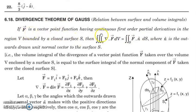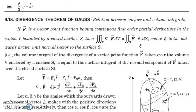The Divergence Theorem says that if F is a vector point function having continuous first-order partial derivatives in a region V bounded by a closed surface S, then the triple integral over V of ∇·F dV is equal to the double integral over S of F·N dS, where N is the outward unit normal vector to the surface S.